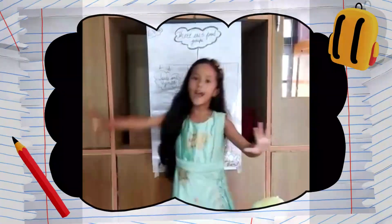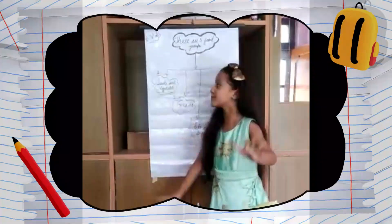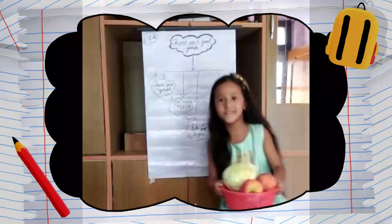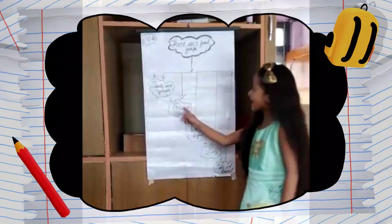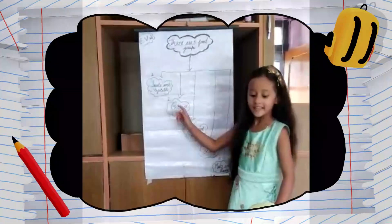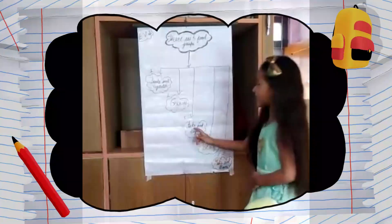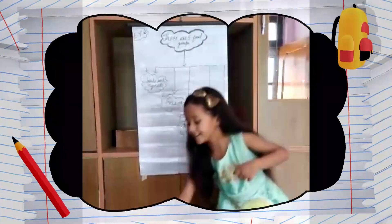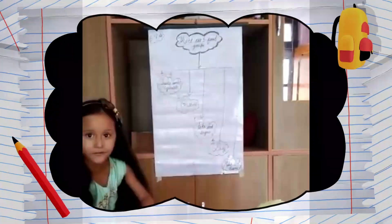There are 5 food groups. The first one is fruits and vegetables. Grain is the second one. The third group is fats and sugar. Water is the fourth one.